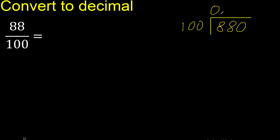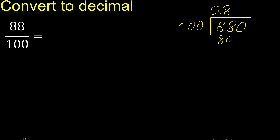Now we have 880. 0 point — ok, not less. So 100 multiplied by which number is nearest to 880 but not greater? Multiply by 9 is greater; multiply by 8 is 800 — ok, not greater.